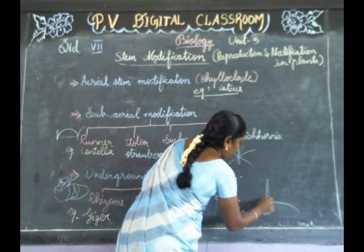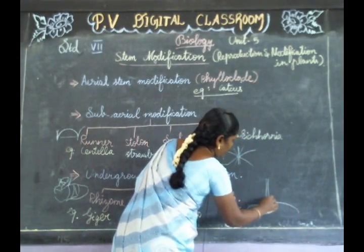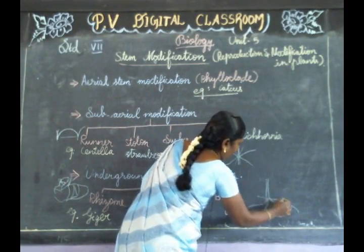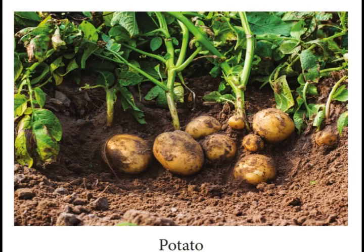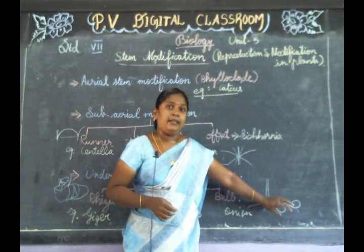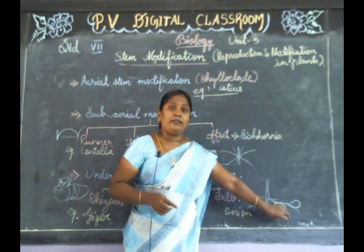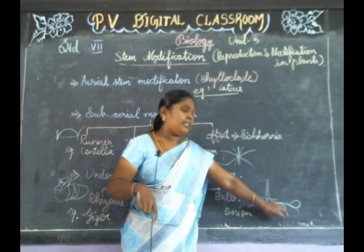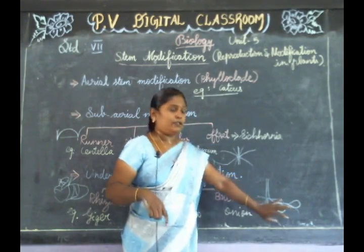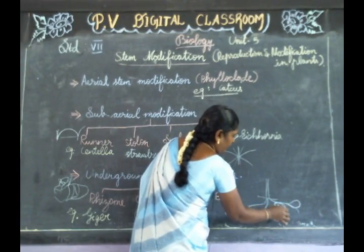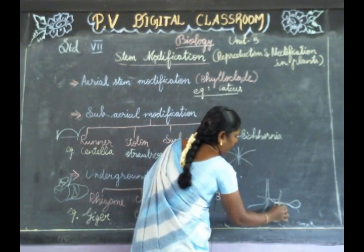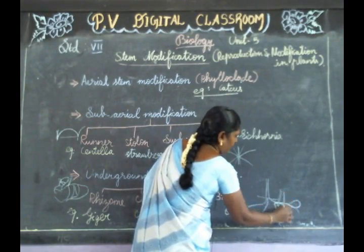From the root parts, many tubers are produced. In the tubers, it gives rise to a new plant. The stem is doing the function of storage and saving food materials. From the eye spots, new plants arise. So it is a tuber-type stem modification.